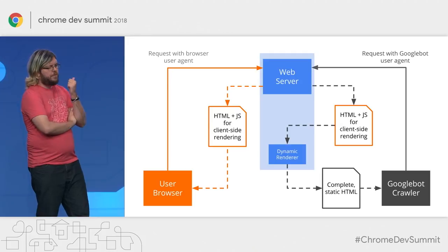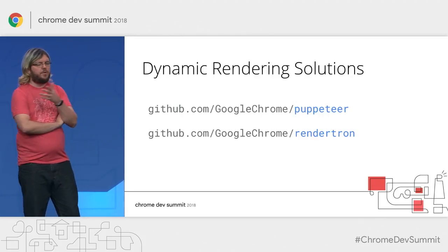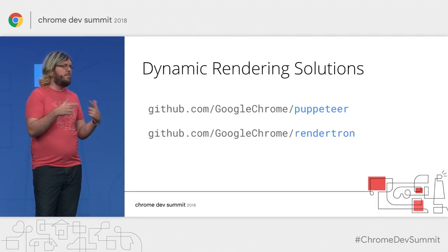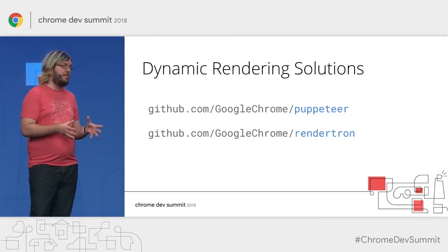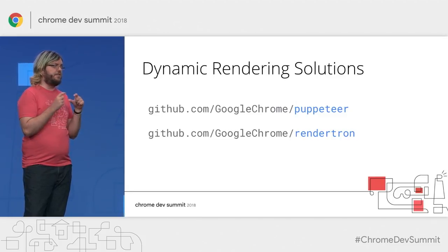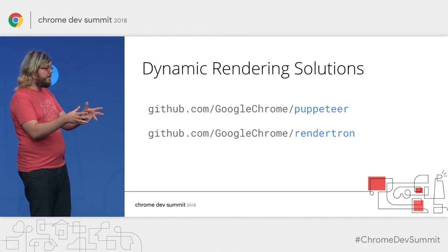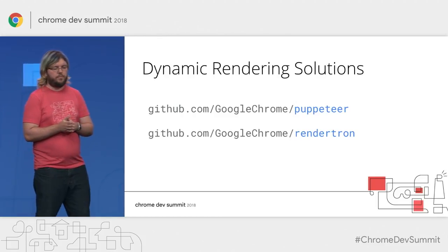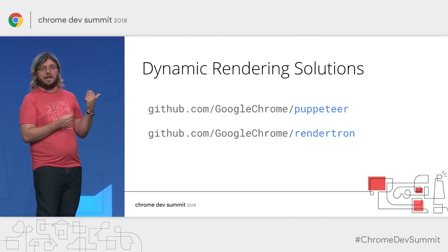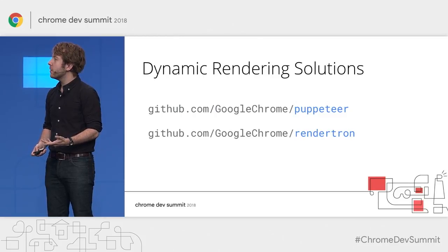MARTIN SPLITT: For this kind of stuff, you can use tools such as Puppeteer, which you mentioned already. TOM GREENAWAY: You could also use RenderTron, which is a higher level of abstraction. Puppeteer is basically an NPM module that programmatically controls a headless Chrome instance. RenderTron steps in at a higher level — you basically have a RenderTron server that uses Puppeteer under the hood, and you give it a URL to render and get the rendered static HTML back. You can deploy that pretty easily on Google Cloud Platform or pretty much anywhere else.